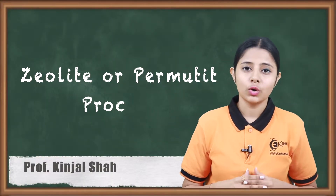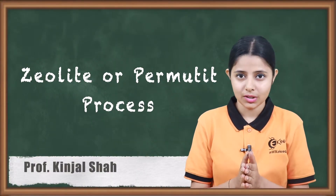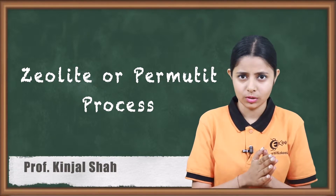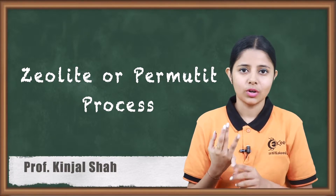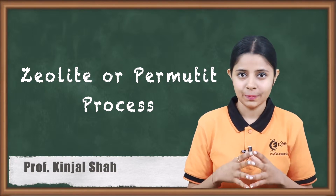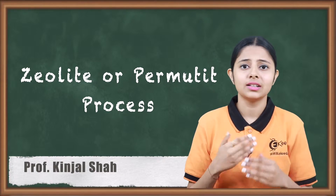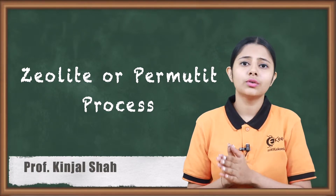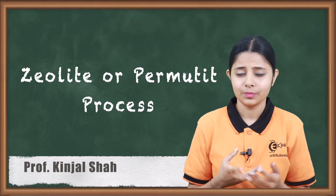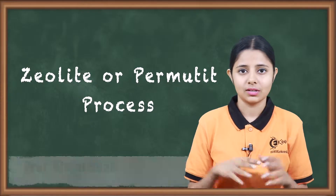Hello friends. In today's session we are going to study about the zeolite permutite process. This is a process or method which converts hard water into soft water. Not only temporary hard water but also permanent hard water can be converted into soft water by this process. In this session we will study in detail how exactly this process works, what the different reactions are, and what a zeolite or permutite is.